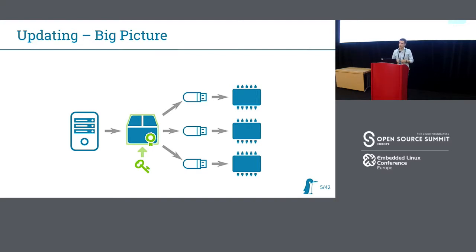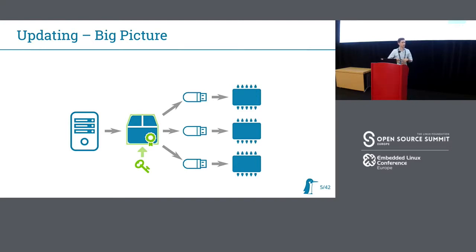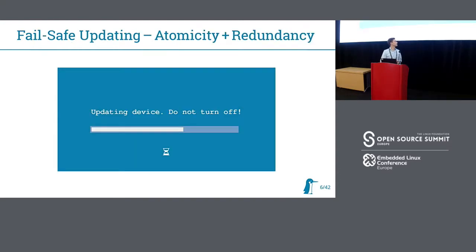What we're going to talk about today is mainly about the update artifact generation and signing, and also — this is the main part — about how to install the update on the target: about fail-safe installation. The key to fail-safe installation is atomicity. This means the update is either fully valid or fully broken, with nothing in between.